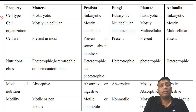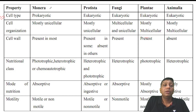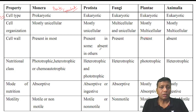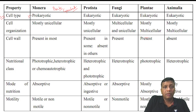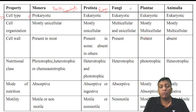Looking at cell types: Monera have prokaryotic cells. Protista, Fungi, Plantae, and Animalia all have eukaryotic cells. Examples for each kingdom — in Monera: bacteria and cyanobacteria. In Protista: protozoa-type organisms. In Fungi: mushroom, Agaricus, and many others. Plantae is the plant kingdom, and Animalia is the animal kingdom — everybody knows. Monera are prokaryotic, which are very primitive cells, while eukaryotic cells are very advanced.